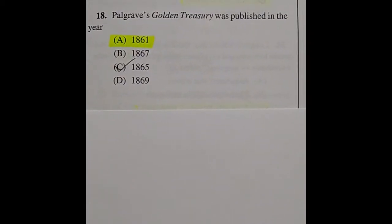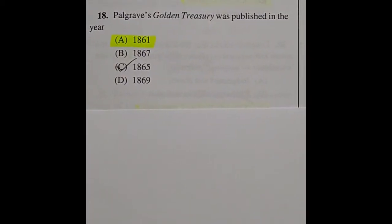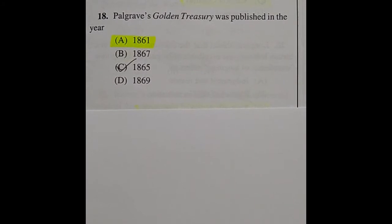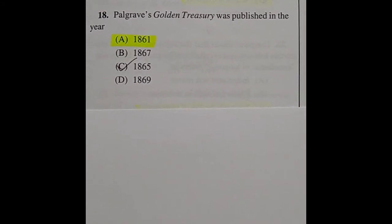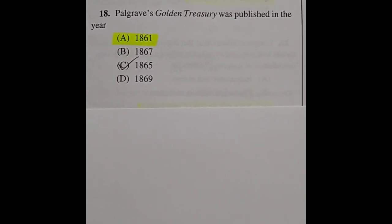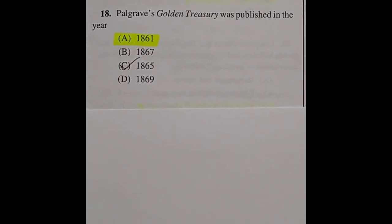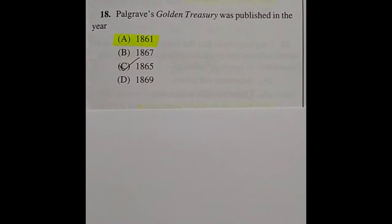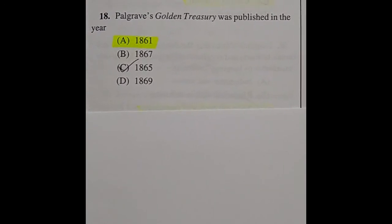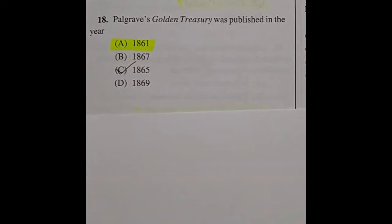Question 18: Palgrave's Golden Treasury was published in the year — the right answer is 1861, option A.